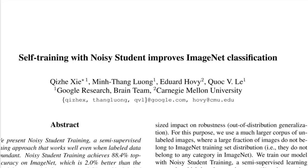Today we'll look at 'Self Training with Noisy Student Improves ImageNet Classification' by Qi Zhe Xie, Min Tan Luong, Eduard Hovey and Kwok Vili. This paper takes an ImageNet classifier trained on the ImageNet dataset and uses it as a teacher model to label a bunch of unlabeled images. It then trains a student model that is larger than the original teacher on those teacher-labeled images, which improves classification on the ImageNet validation set.